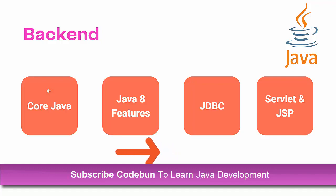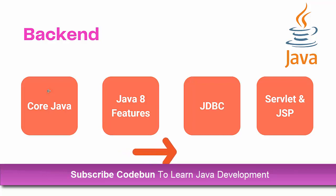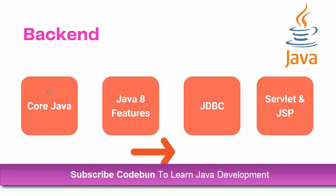Java keeps upgrading its versions — currently version 18 and 19 are available — but there was a major change after Java 8, so you should understand those changes and new syntax features. After Core Java, move to JDBC. JDBC helps you connect your application with a database. Even though we now use Hibernate and JPA, JDBC is the foundational layer where you learn to create custom queries, manage database connections, and handle those connections.